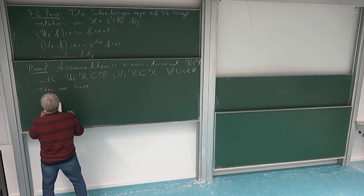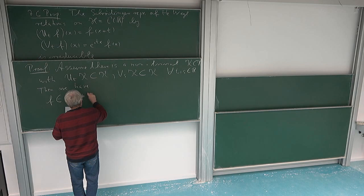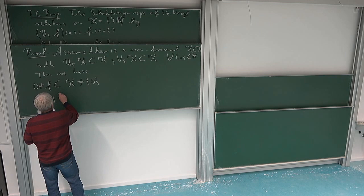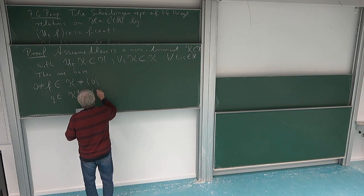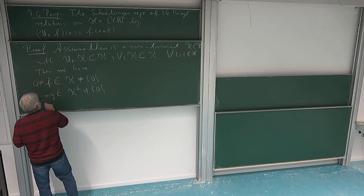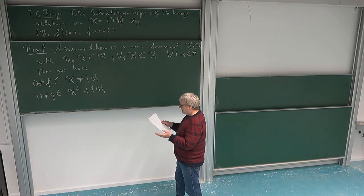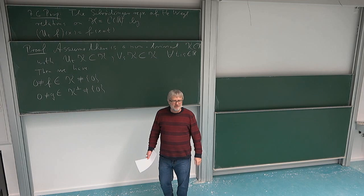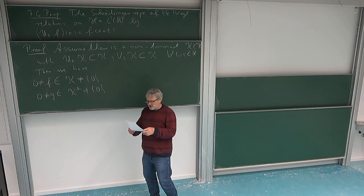So first, we have some f in K which is non-zero, since K is not trivial. We also have a g in the orthogonal complement K⊥ which is also non-zero, since K is not everything. Now the inner product of g and f is zero because g is in the orthogonal complement of K. The key point is that applying V and U preserves this orthogonality relation.